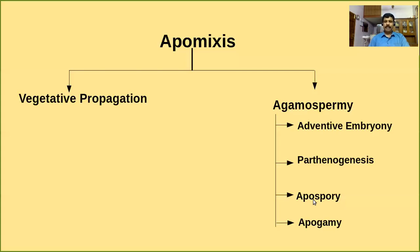The fourth type is apogamy. Apogamy means any haploid cell of the female gametophyte — except the egg cell — will be responsible for the formation of a haploid embryo without fertilization.